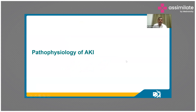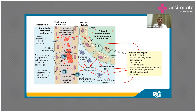Looking at the pathophysiology of AKI, this is a very colorful and informative diagram. You can see the interstitium, peritubular capillary, and the wall of the proximal tubules. There are possibilities of injury in the peritubular capillary endothelium, the proximal tubular wall, and in the lumen of both the capillary and the tubules.